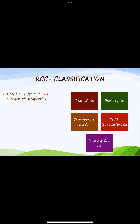Based on histology and cytogenetics, the different classes of renal cell carcinoma are: clear cell carcinoma (most common), papillary carcinoma, chromophobe cell carcinoma, Xp11 translocation RCC, and collecting duct or Bellini duct carcinoma.